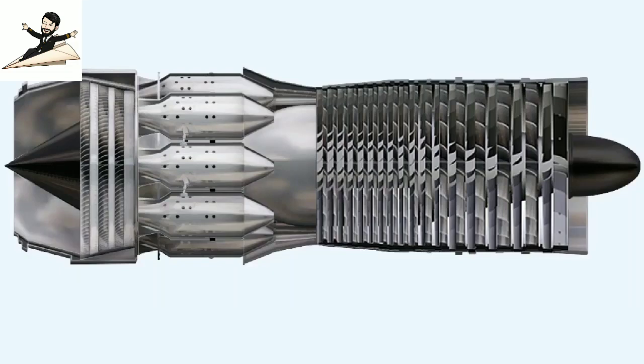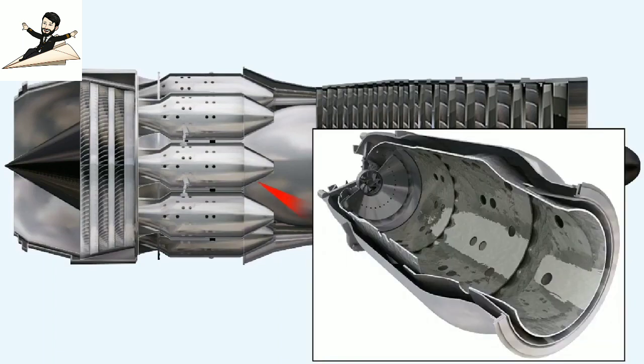Two means of getting rid of fuel are open to us. First, the fuel drain system, and second, a method of evaporating the remaining traces of fuel from the combustion chambers, the turbine, and the jet pipe.